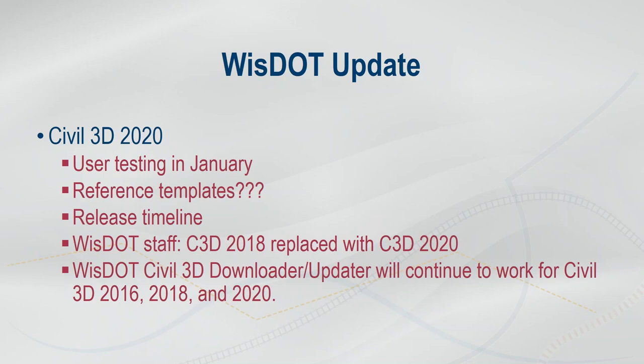The Civil 3D downloader and updater will continue to work for all versions — 2016, 2018, and 2020. Moving forward after 2020, we'll probably be focusing updates only on 2020. If there are major or serious issues that need to be addressed, we can go back for 2016 and 2018, but updates moving forward will be focused on 2020. With that, I'm going to hand it over to Eric Arneson for his presentation. Thank you for listening.